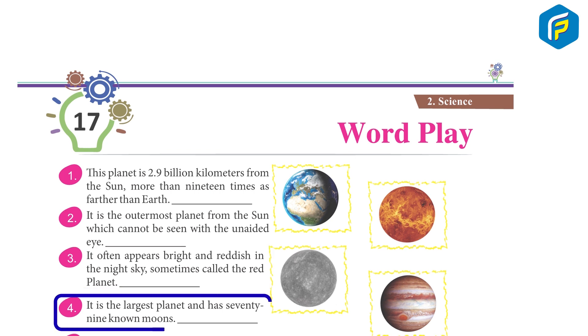4. It is the largest planet and has 79 known moons. Jupiter.